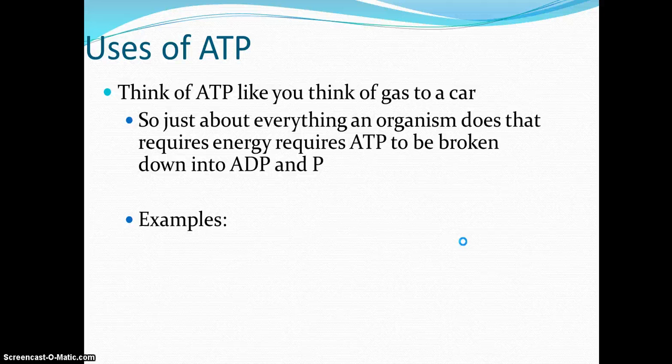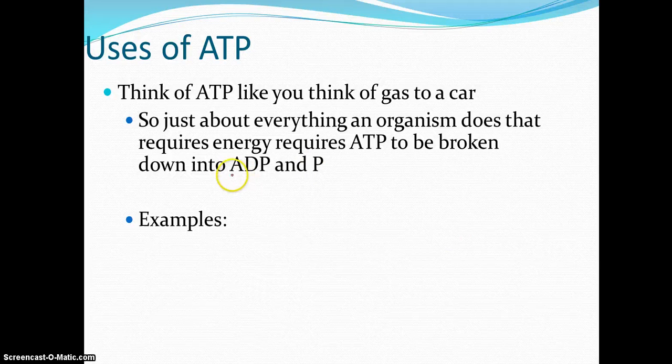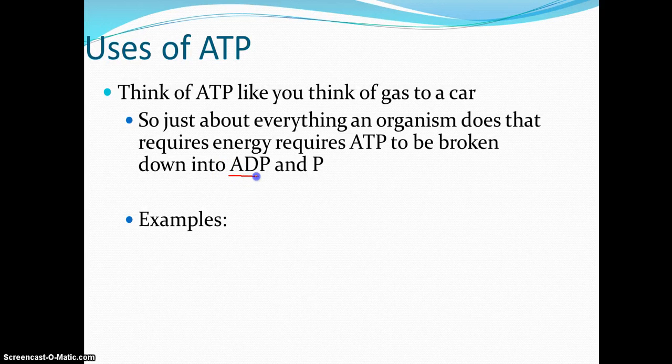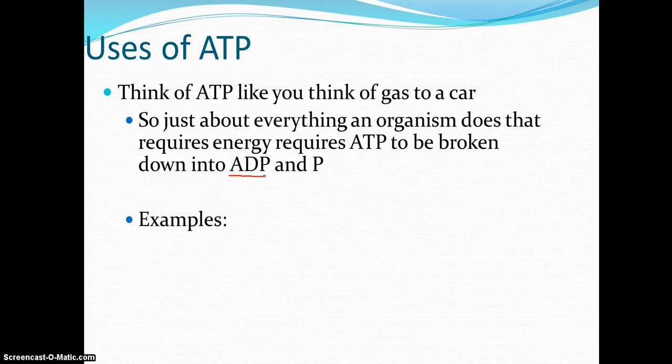Same thing with our cells. We need ATP for everything. Everything that an organism does that requires energy, that energy is the ATP. And every time we use one ATP molecule, like we said, we break off that third phosphate. Breaking that bond is catabolic and releases energy. And we're left with ADP and a phosphate, which is kind of like your Chromebook battery when it's out of energy. It's still there, it's just uncharged now.